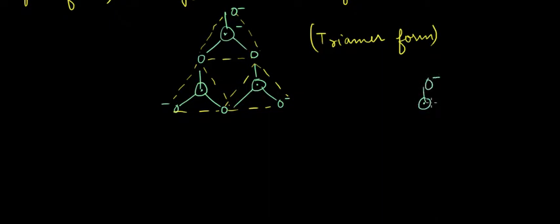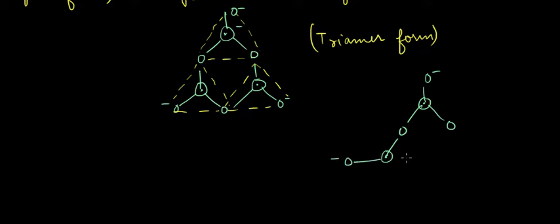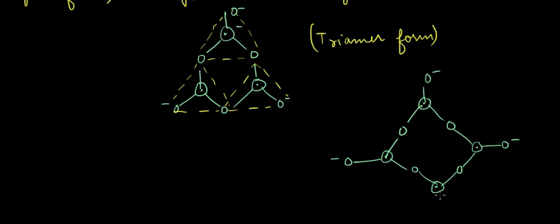Next, let us see the tetramer form. If we have a structure like this, with one more oxygen atom connected here, one more oxygen atom connected here, and another oxygen atom connected here — this is the tetramer form of cyclic silicate.